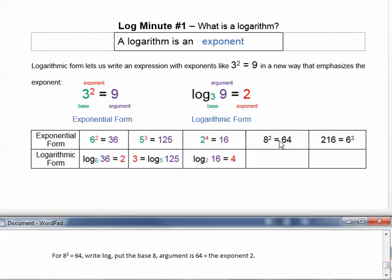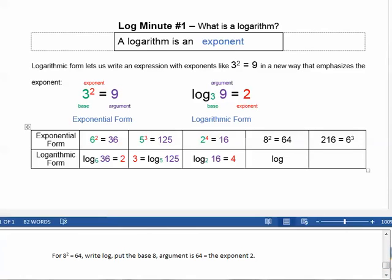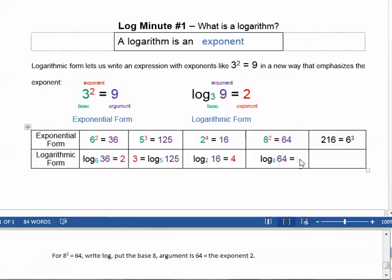For 8 squared equals 64, write log, put the base 8, argument is 64, equals the exponent 2.